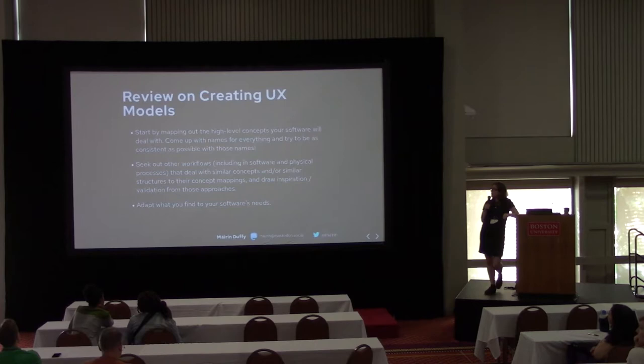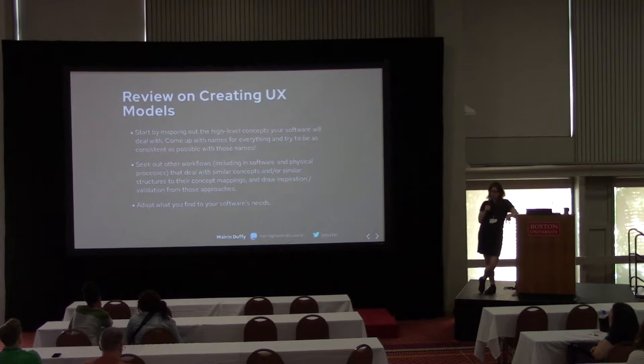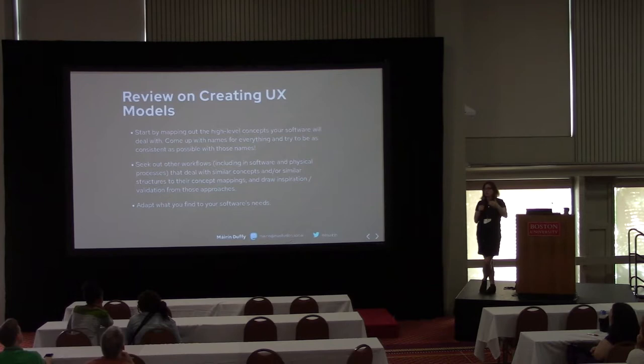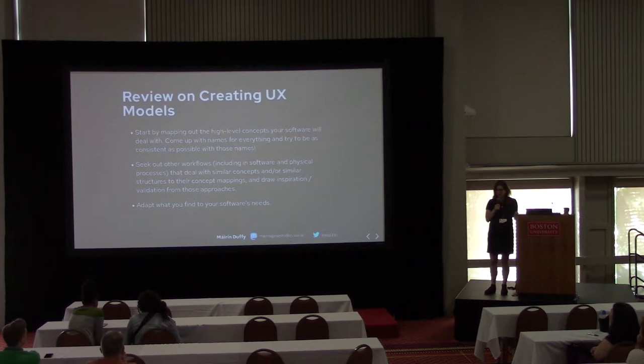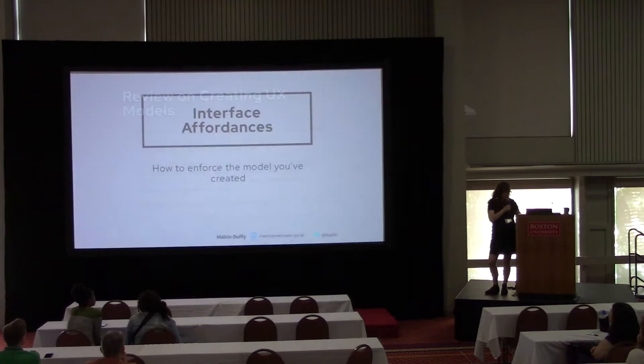Quick review on how to create a UX model: mind map the concepts and tasks you're working with. Look around and see what other tools either work with objects that have similar relationships, or work in a similar space, and see what you can learn from them. Something will be easier for the user if it's not novel — if they recognize what they're supposed to do. If it's called a pipeline, they know things are being chained together. You want that recognition so there's less explaining necessary. Then adapt what you find to your software's needs.